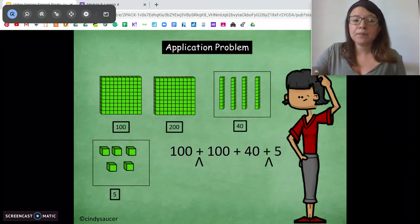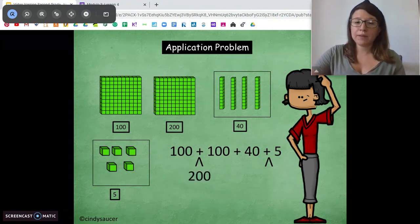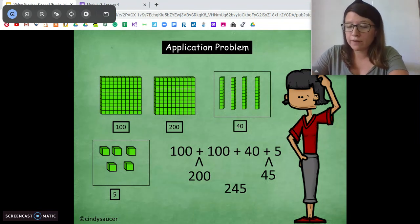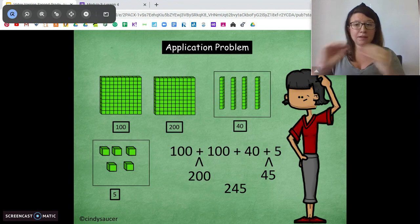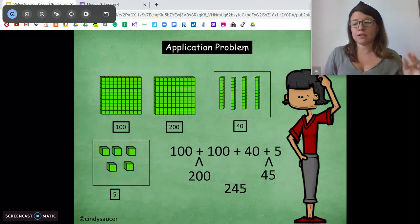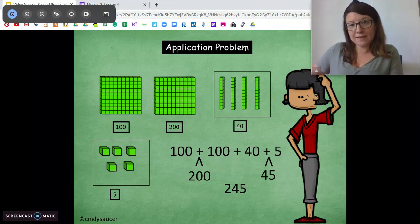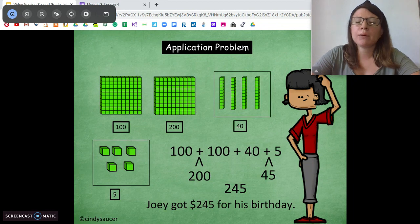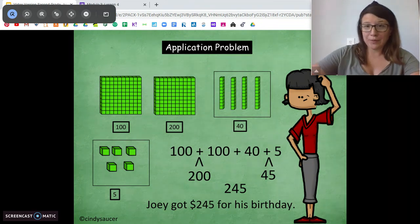So we can do it that way, or we can add. We're going to add like terms. So we're going to add the 100 plus the 100, and the 40 plus the 5, 200 plus 45, 245. So remember, we can't just stop a word problem there. We have to tell what that 245 means. What does the 245 mean? Is it 245 bananas? $245, right? Joey got $245 for his birthday. That's a lot of money. Joey's very lucky.